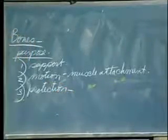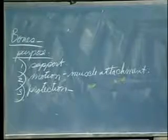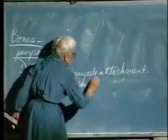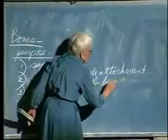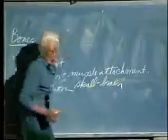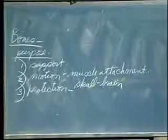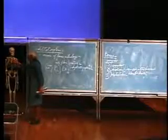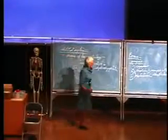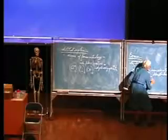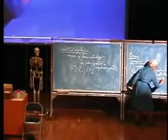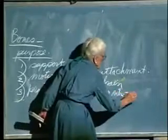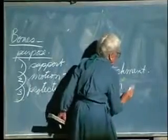Fortunately, we have bones for protection. Obvious examples: skull protecting the brain. The sternum - the breastbone - and the ribs for protecting the heart and the lungs.